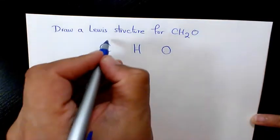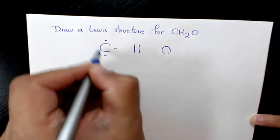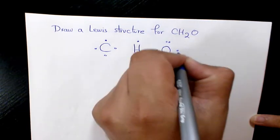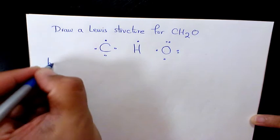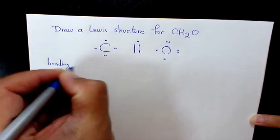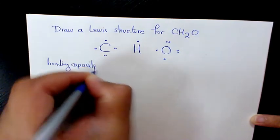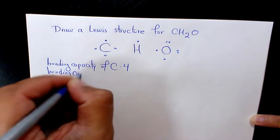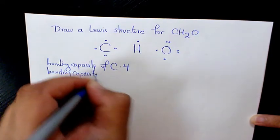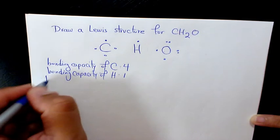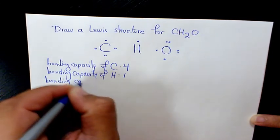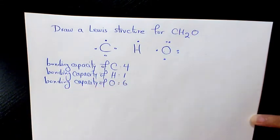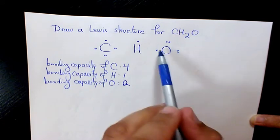The valence electrons for carbon is 4: 1, 2, 3, 4. Hydrogen is 1. Oxygen is 1, 2, 3, 4, 5, and 6. So the bonding capacity of carbon is 4. Bonding capacity of hydrogen is 1. And bonding capacity of oxygen is actually 2, because here we have 1 and 2 here.